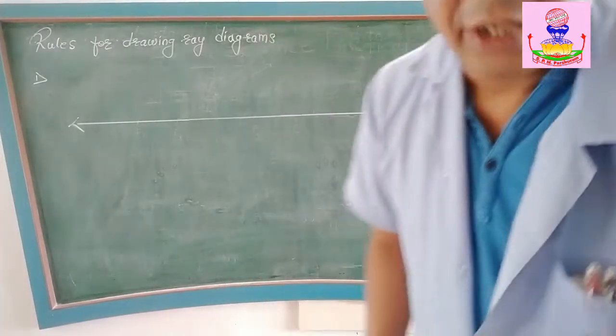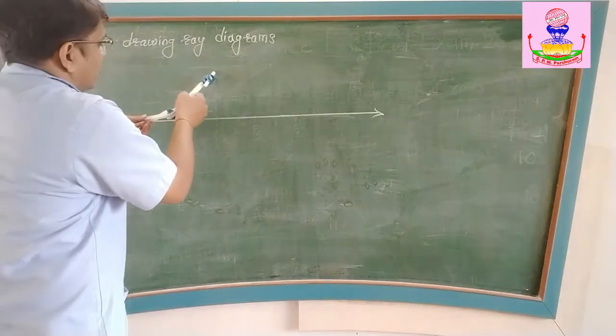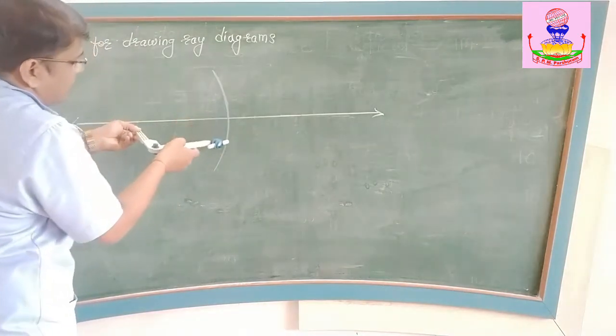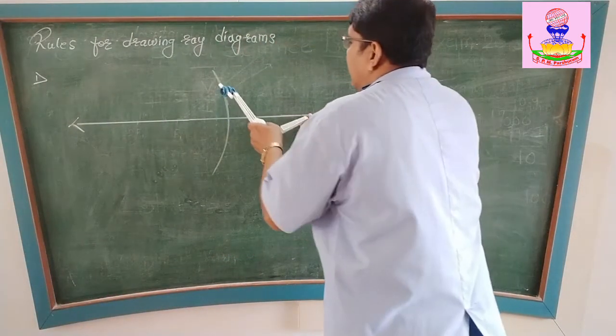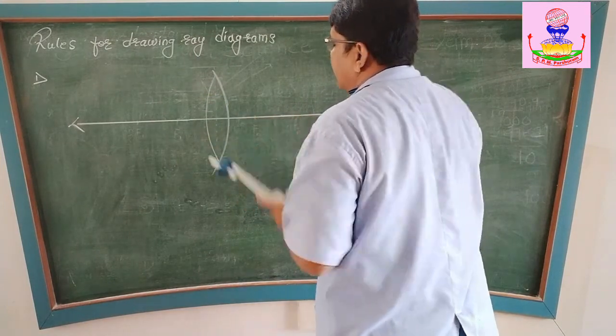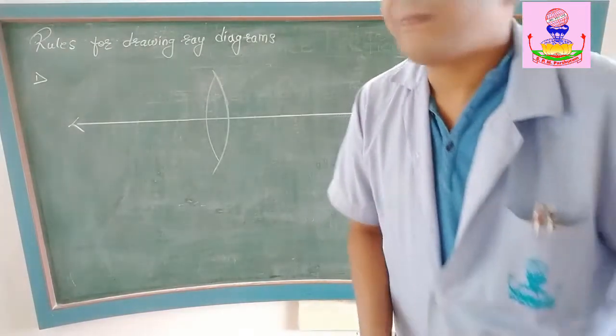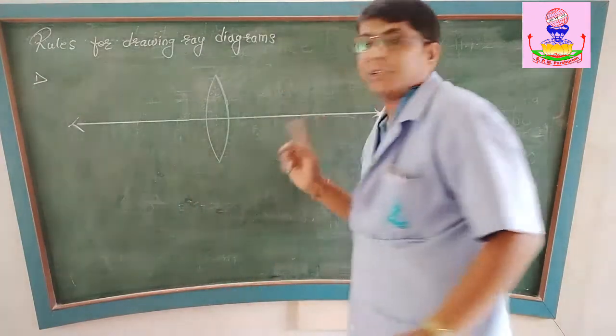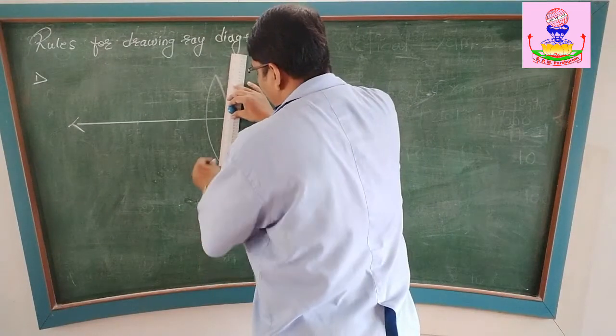First I will draw the convex lens. Take a certain distance on your compass and draw the lens. From the other side take the same distance and draw the arcs. Whatever extra arcs are there, rub that. Remember that we are supposed to draw thin lens only, don't draw thick lens.